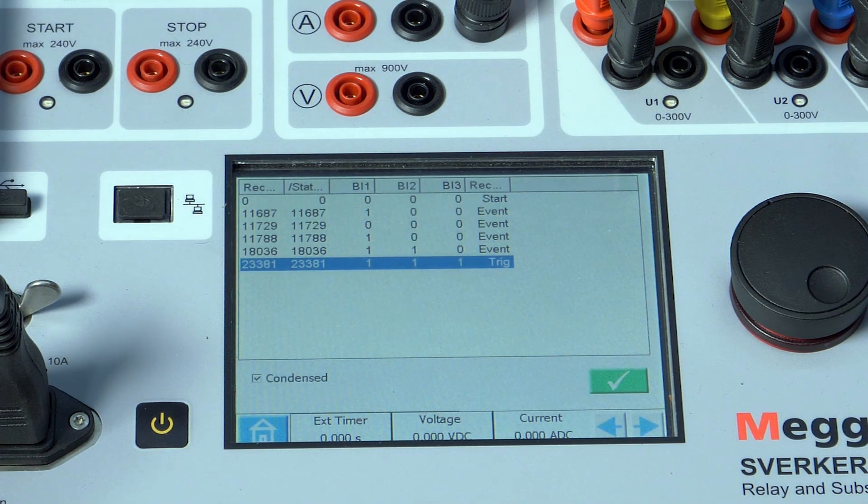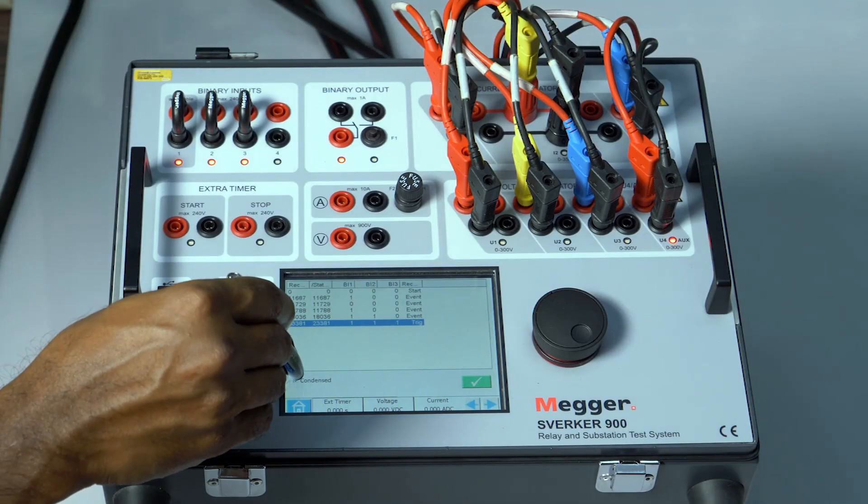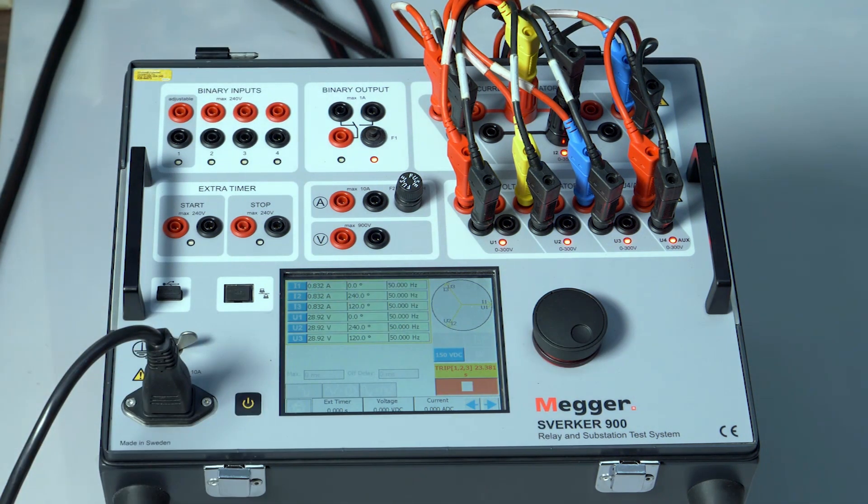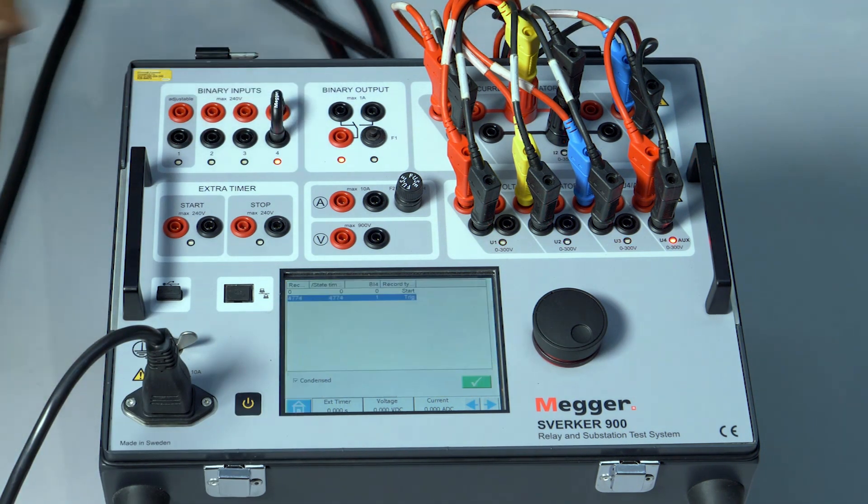We can also see the analog value by removing this condensed screen. So let me remove the shorting. Now let me run the test again. Now I'm going to short input number 4.